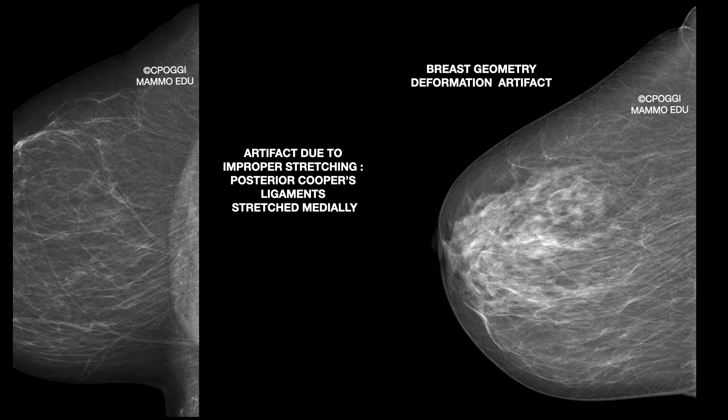The direction of the radiographer's hand moving out of the field should not produce artifacts. As you can see in the first example, the posterior ligaments of Cooper appear somehow stretched medially. The same occurs in the second example, associated with a fault in positioning technique as well.